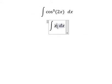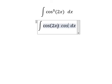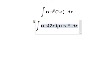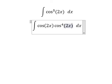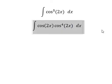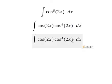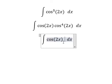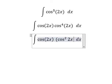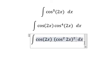cosine 2x times cosine to the power of 4 of 2x. Next, this one I can put into cosine 2x where everything is to the power of 2.